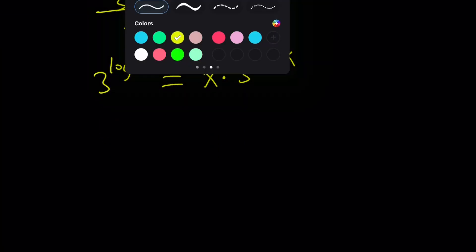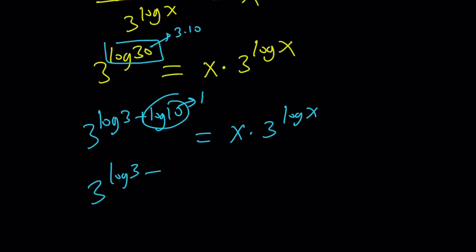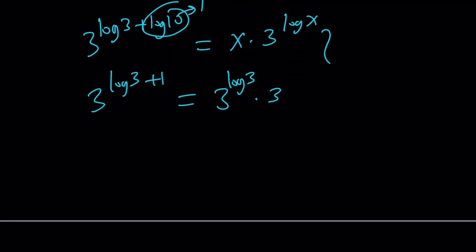I'm going to break down the log 30, just like before. Remember, 30 is 3 times 10. So, we can write it as 3 to the power log 3 times 10, which is log 3 plus log 10. And log 10 is 1, so this is 1. And from here, we get 3 to the power log 3 plus 1, which is 3 to the power log 3 times 3. Now, here's what we got. These two sides are equal. So, I can write it as x times 3 to the power log x equals 3 times 3 to the power log 3. What do you think this means? Look at it.